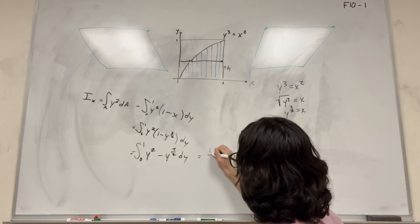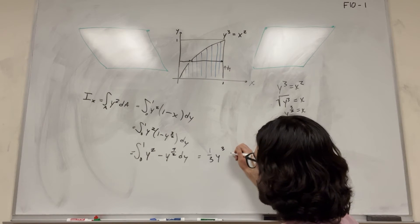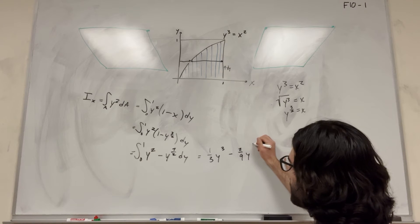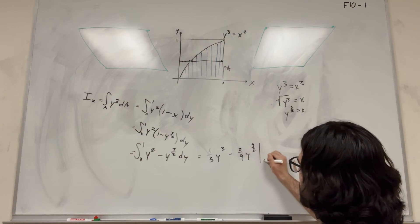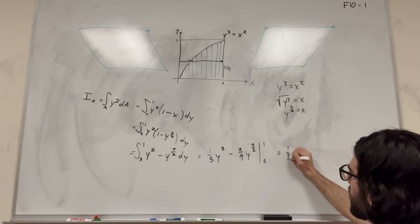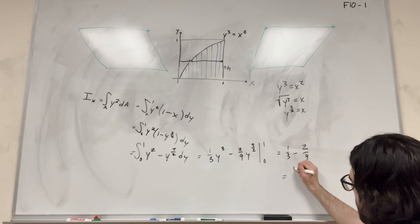So this becomes one third y to the 3, minus then two ninths y to the 9 halves. And this is from zero to one. So plugging it in, you're just going to get one third minus two ninths. And this simplifies now to one ninth.